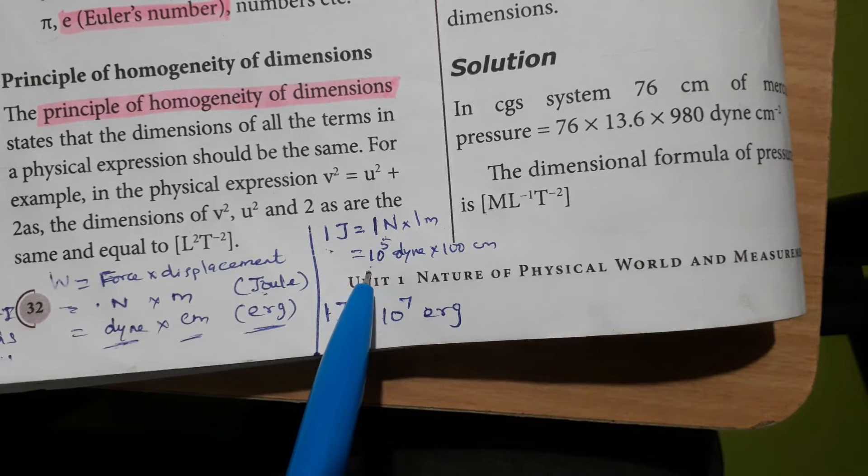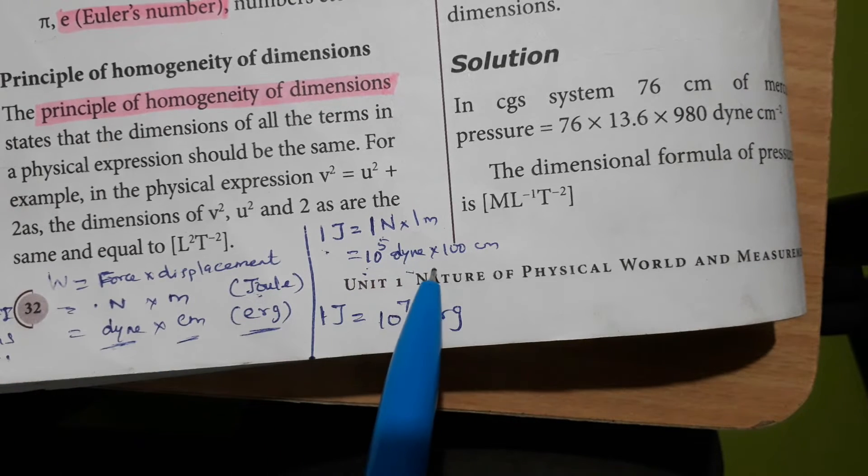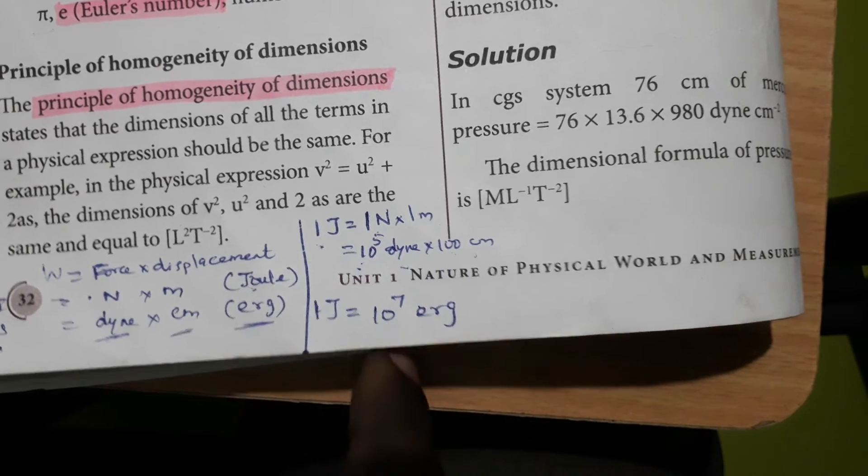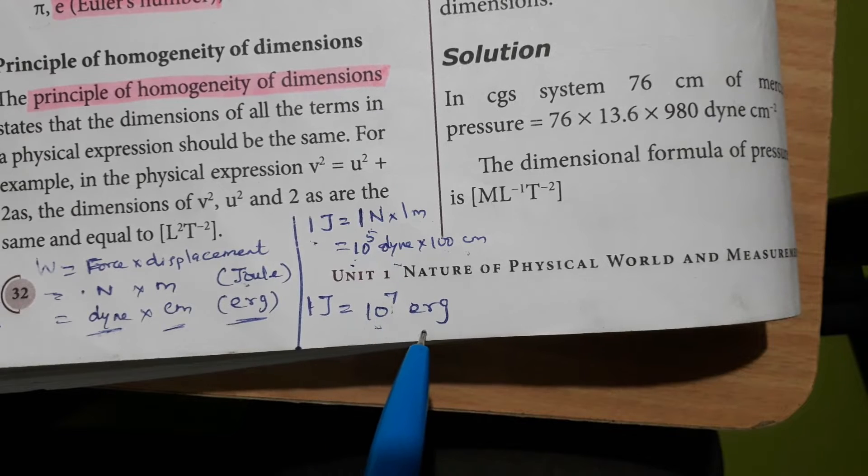1 Newton is equal to 10 to the power 5 dyne, that is unit of CGS system, and 1 meter is 100 centimeter. Now we have 1 Joule is equal to 10 to the power 7 erg.